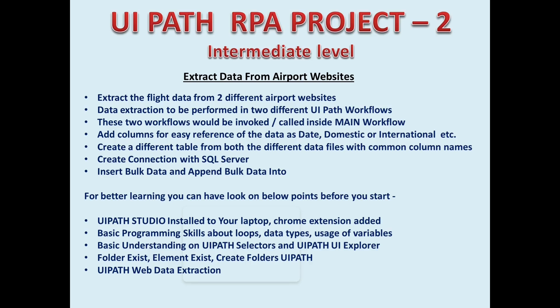We will call these two different workflows — which we develop to extract data from two different websites — inside the main workflow, which is the third workflow in UiPath. We will also see how to add columns into an existing data table using UiPath's Add Column activity, and I will also explain how to write the code for the same if you prefer not to use that activity. Once we have both tables from the two workflows, we will create a combined table in the main UiPath workflow.